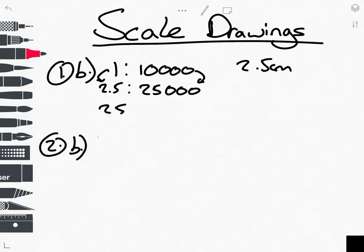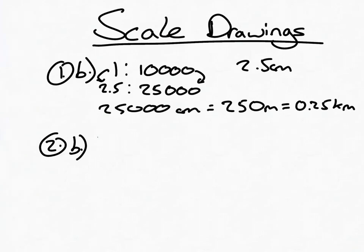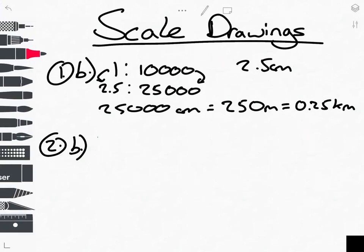But we get 25,000 centimetres. So what is that in real life? 25,000 centimetres. Well, if we divide by 100, we get 250 metres. And you could do 0.25 kilometres. What does the question ask for? It asks for in metres. So you'd stick at this one. So that's 1b.